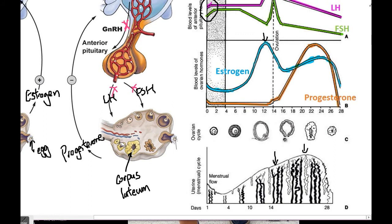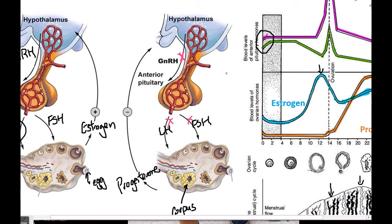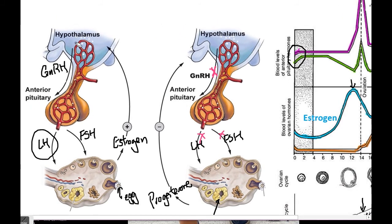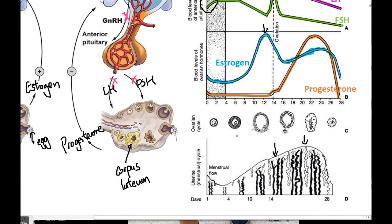The corpus luteum is not going to last forever. If there is no pregnancy — no fertilization of the egg — the corpus luteum is going to break down, and as it does, the level of progesterone comes down. When the progesterone level drops back to near baseline, there is no more hormone to support the endometrium lining, and all the new blood vessels formed in the previous cycle will shed — and the menstrual flow will begin. With the decrease in progesterone, the negative feedback inhibition is lifted, GnRH rises again, FSH and LH are released from the anterior pituitary, and FSH causes another follicle to develop for the next cycle.